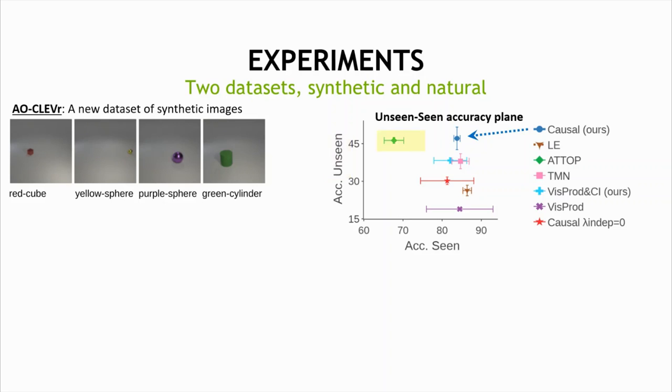Some models tend to favor accuracy of unseen pairs over accuracy of seen pairs, while other models tend to favor the seen pairs.